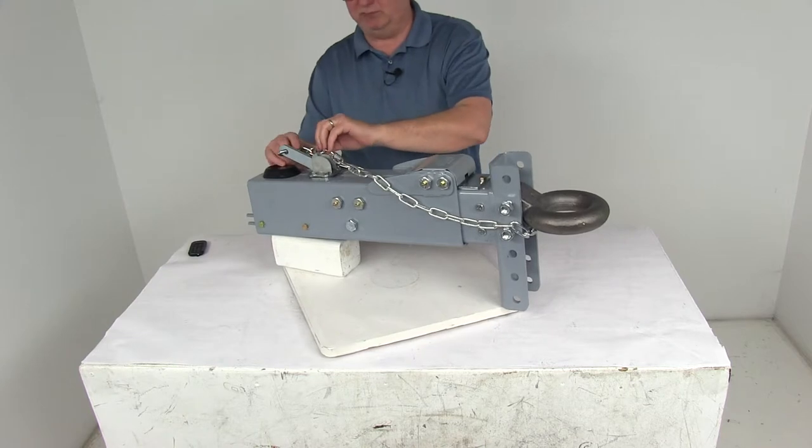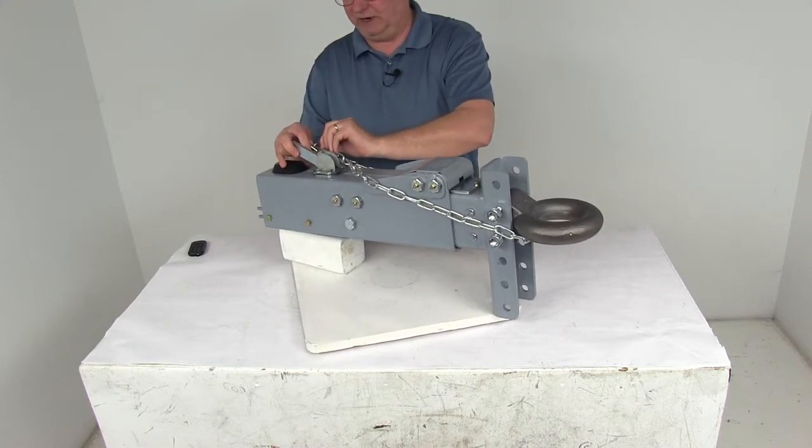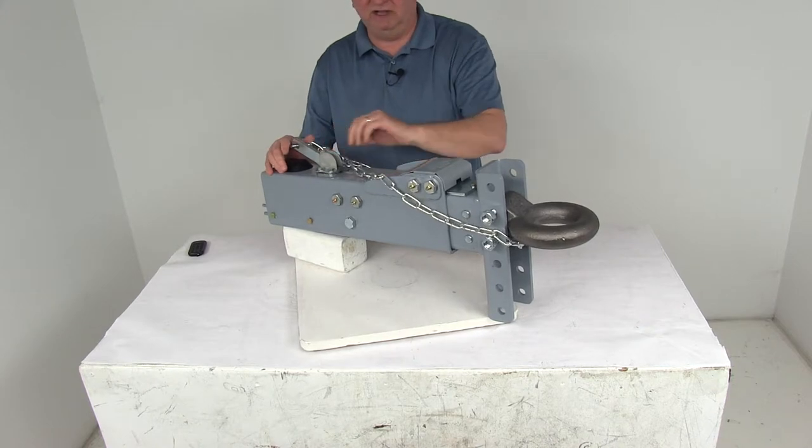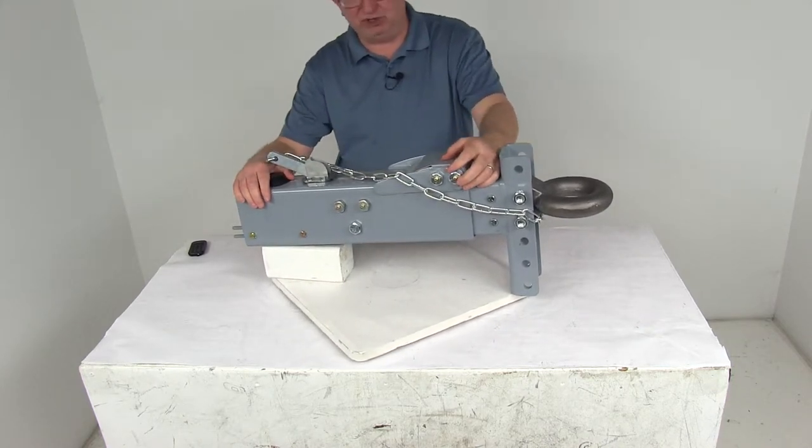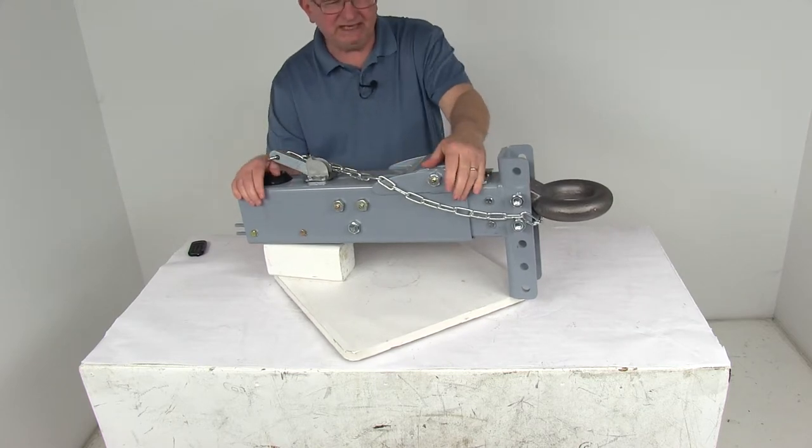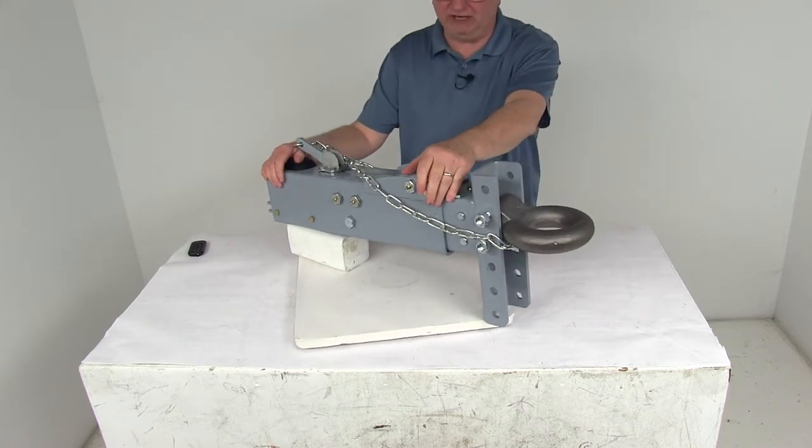It does come with this breakaway kit. This breakaway kit would be used to hook this chain to your tow vehicle and then if the trailer ever comes detached from the tow vehicle that chain would pull and activate the brake system to keep the trailer from a runaway situation.